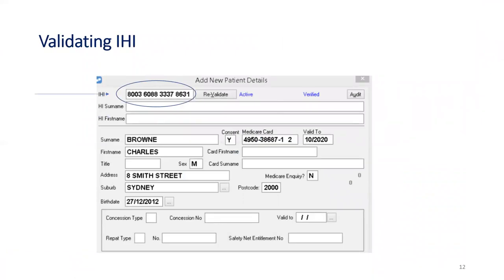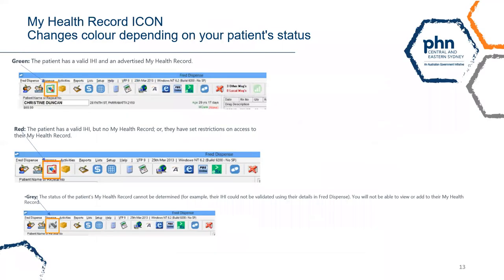FRED Dispense will automatically retrieve the patient's IHI from the Medicare healthcare identifier service and the status will change. The My Health record icon in the toolbar changes color depending on your patient's status. A green icon indicates the patient has a valid IHI and an advertised My Health record. A red icon indicates the patient has a valid IHI but no My Health record, or they have set restrictions on their record, for example a record access code. A grey My Health record icon indicates the status cannot be found, for example not enough details to validate the IHI.